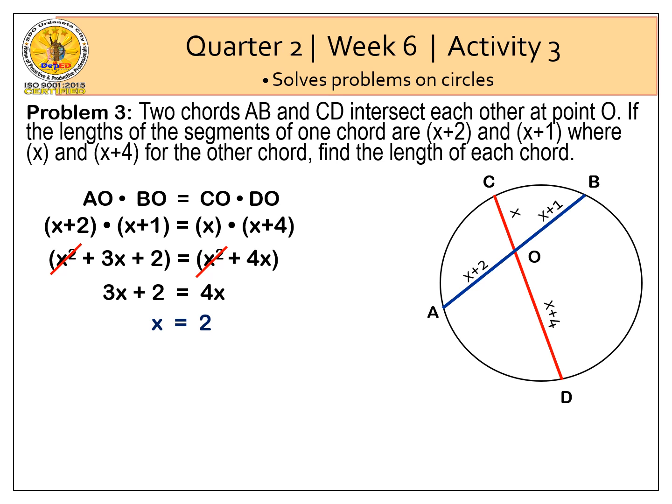Let's find the length of chord AB. Where chord AB is equal to AO plus BO. AO is equal to X plus 2. BO is equal to X plus 1. Substituting the value of X to our equation, we have 2 plus 2 plus 2 plus 1. Line segment AB is equal to 7 units.